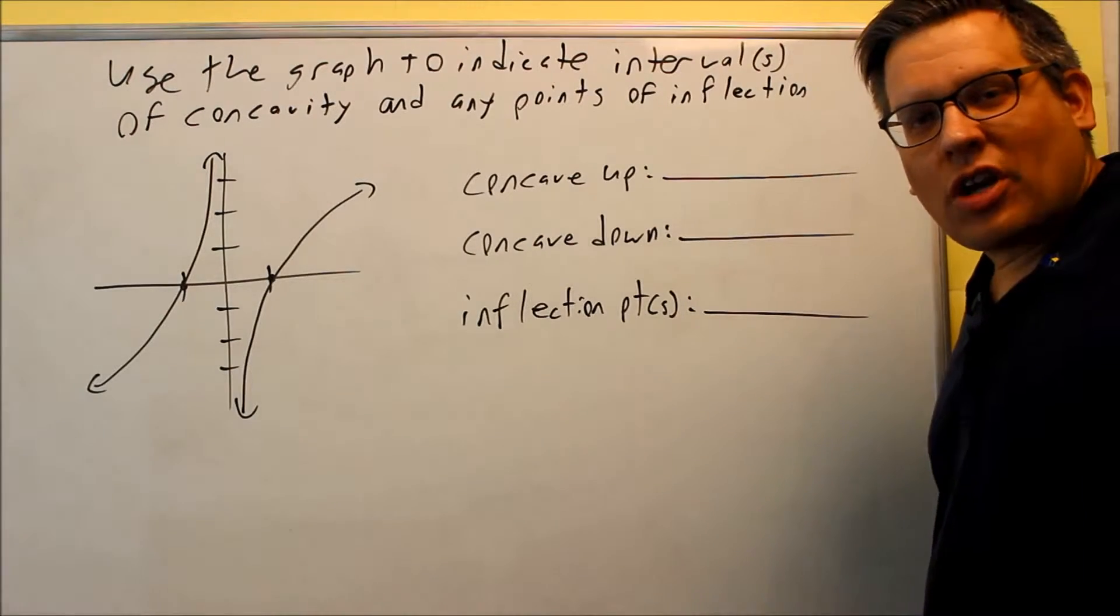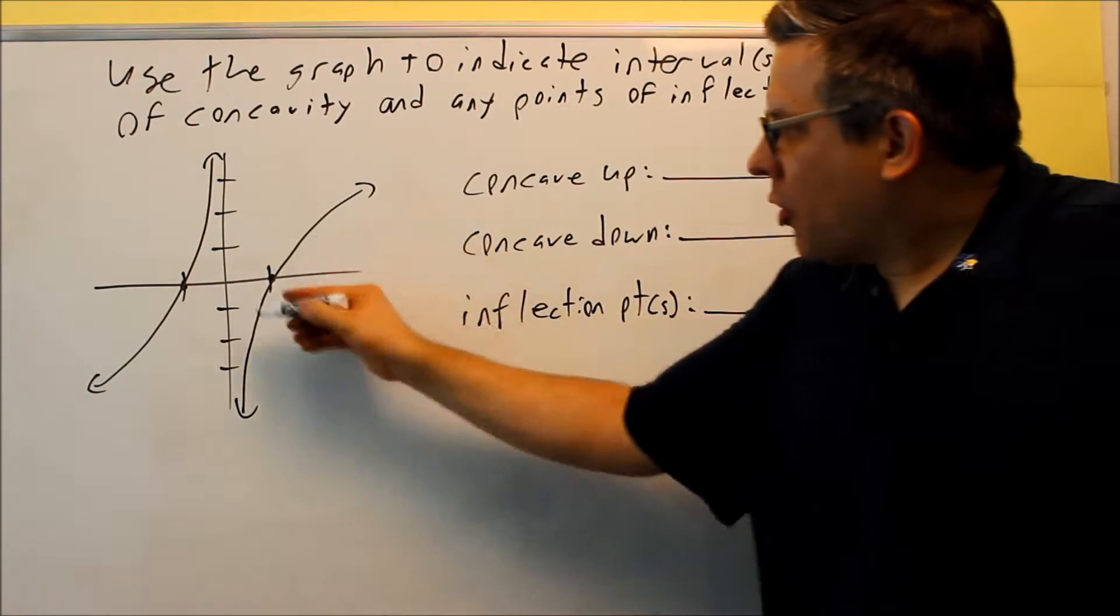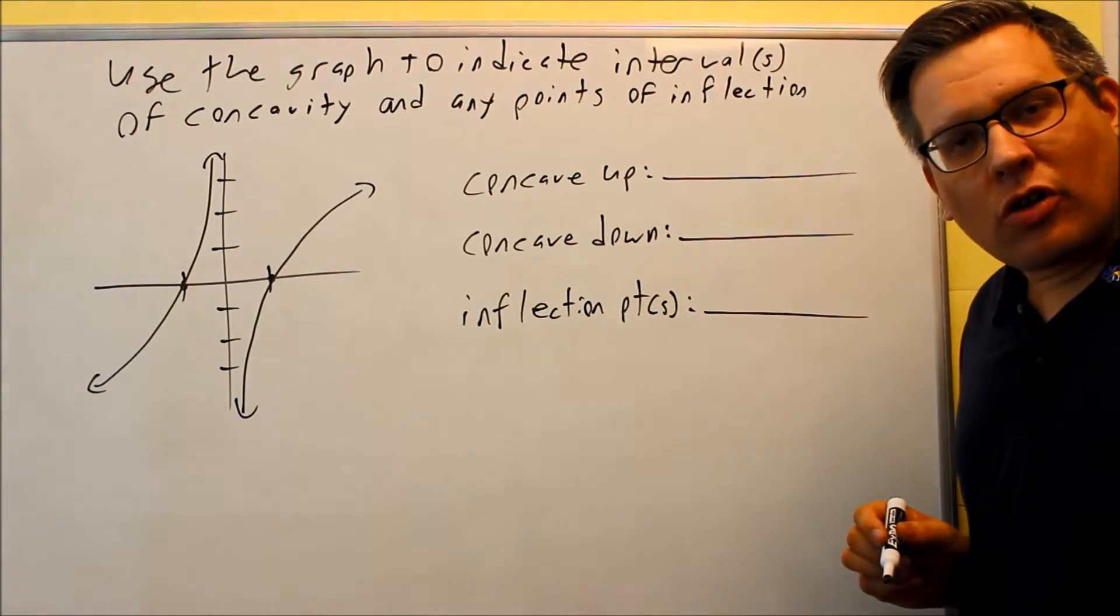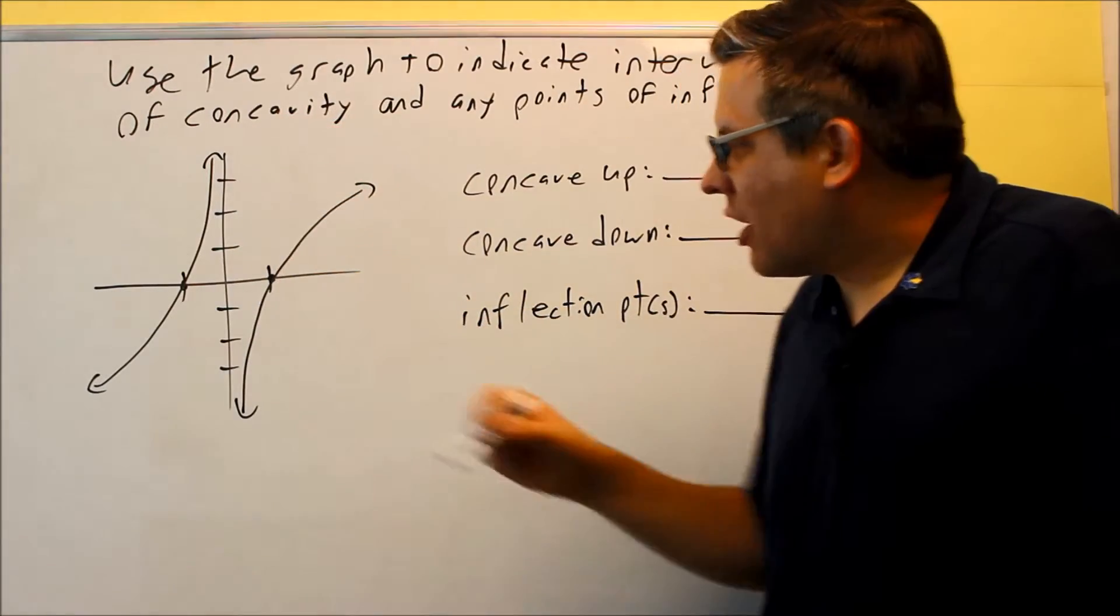Okay, so here's a second example graph that's given here. What we notice about that is there's a vertical asymptote at x is equal to 0.